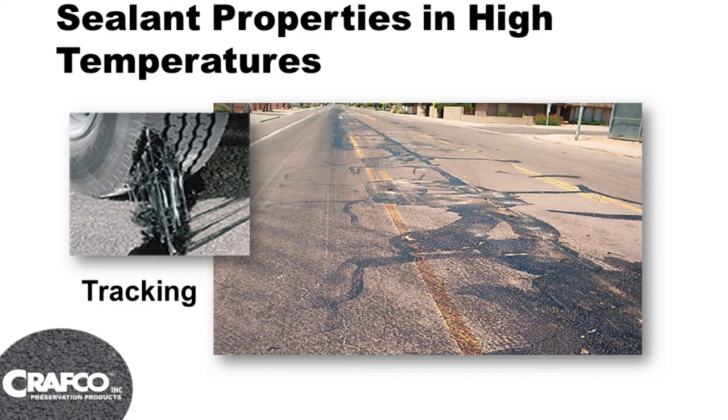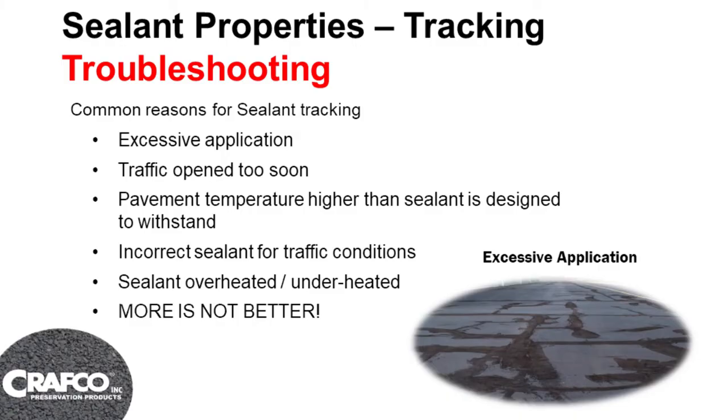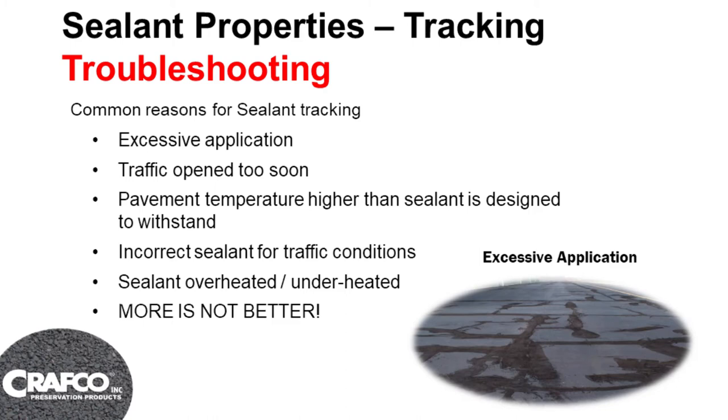This is a picture of what can happen when you have too low a softening point in a hotter climate. You can see all the tracking that's taken place from tires rolling over it. The other problem is there's too much material applied. We want to see it kept clean and on the crack — we like to see good work. Some of the troubleshooting we see with tracking: excessive application, opening traffic too soon without letting the material really set up, and pavement temperature higher than the crack sealant is designed to withstand, or incorrect for the traffic conditions.